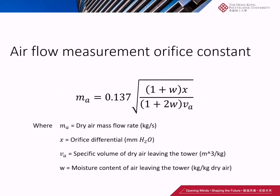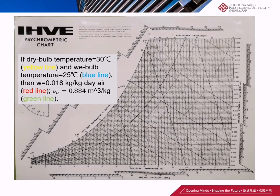In order to calculate the dry air mass flow rate, we need to use the psychrometric diagram to find out the specific volume and moisture content. For example, if we know the dry bulb temperature and the wet bulb temperature, we can use the red line to find out the moisture content and the green line to find out the specific volume.